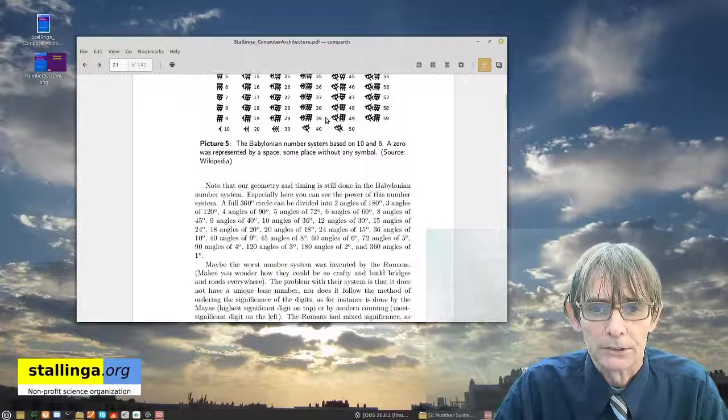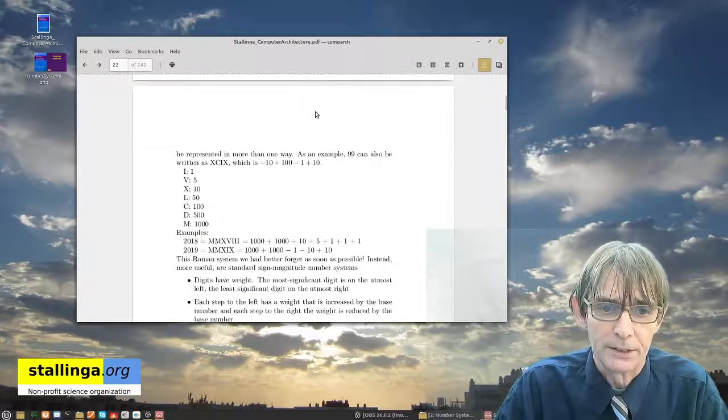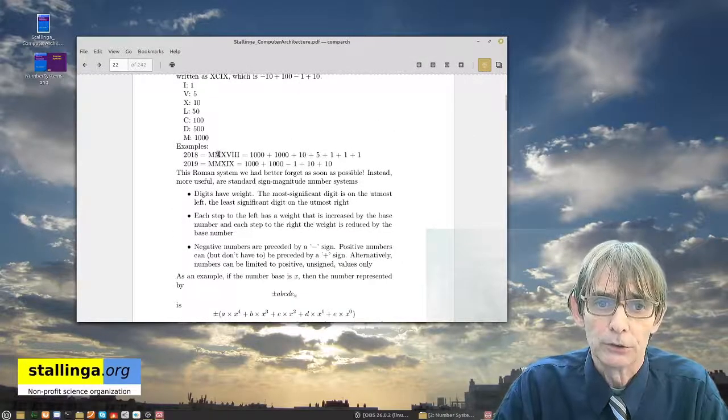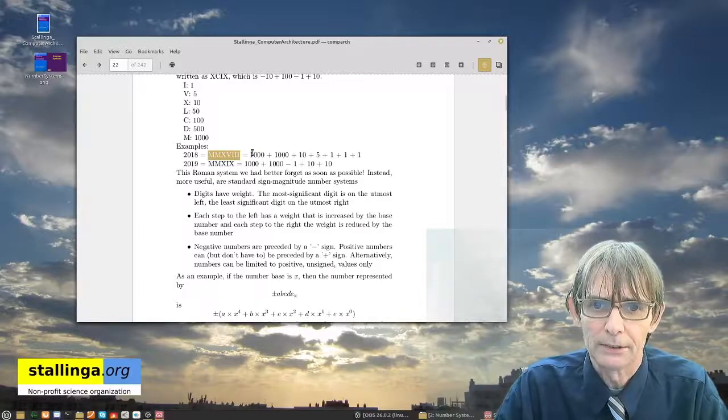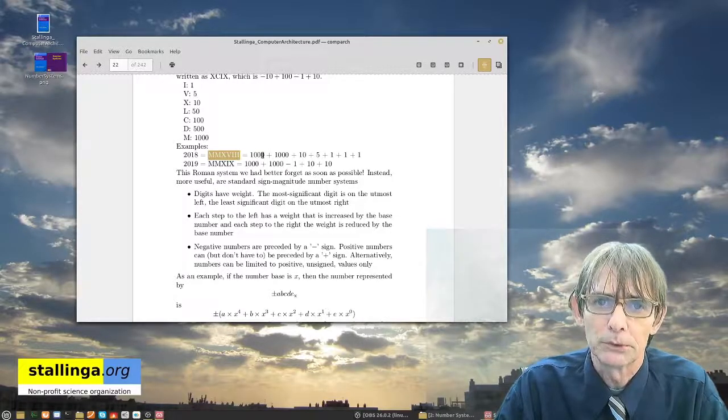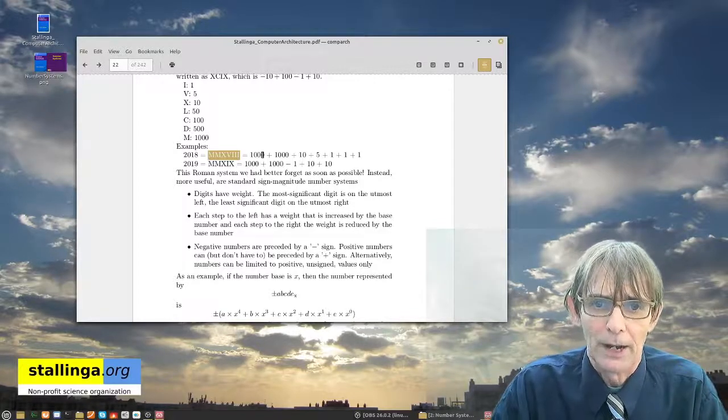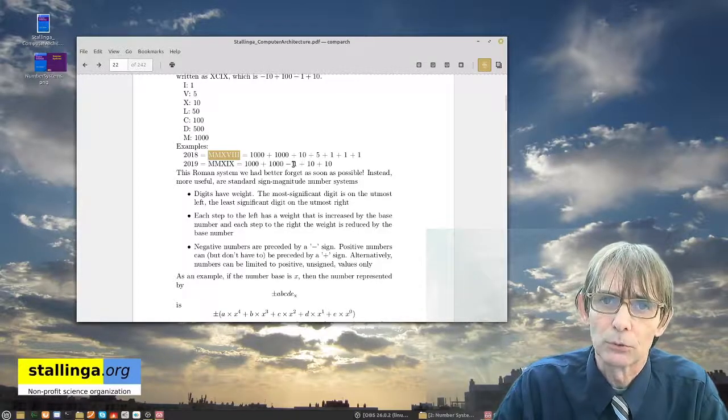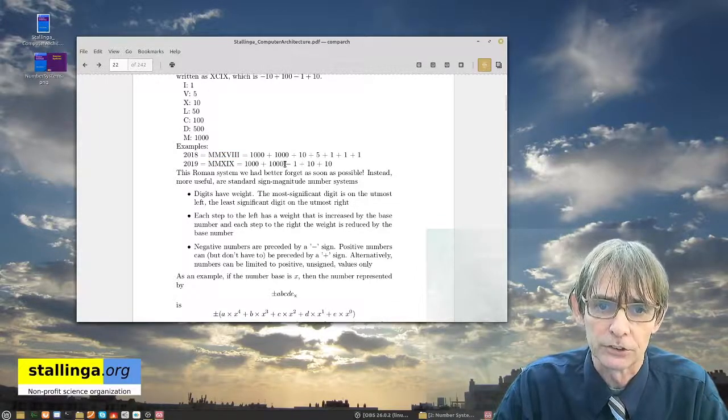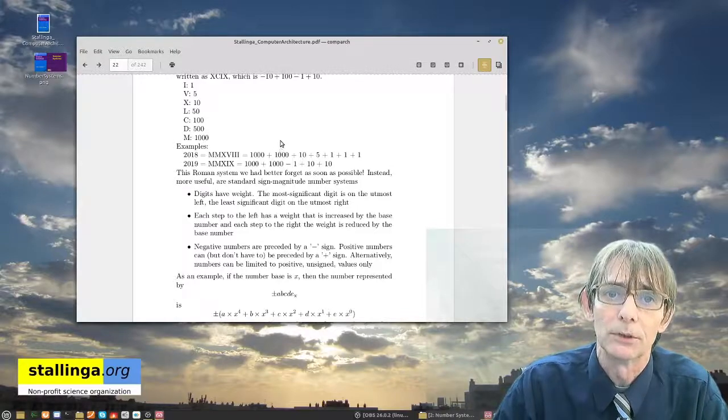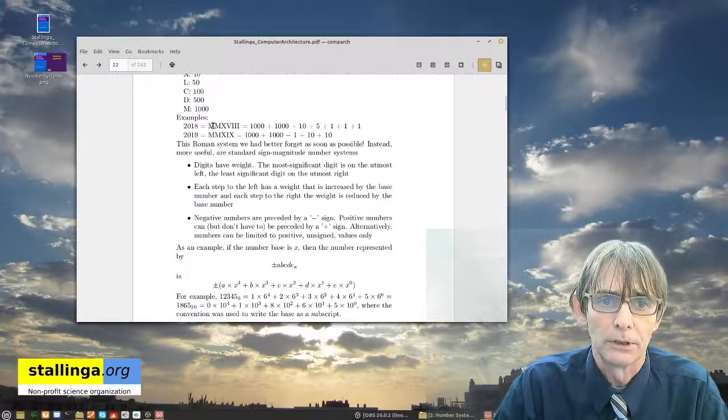And to show you somebody that has completely messed it up, is the Romans. They used actually a system that is some kind of funny calculation of adding and subtracting, and then the position of the digit determines whether you have to add it or subtract it. Well, I think it's so confusing that I am amazed that they could actually build such large structures like the Colosseum and so on. Because that must involve quite heavy calculations involved.